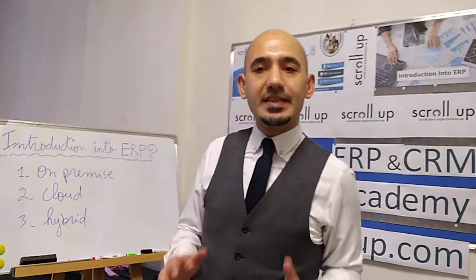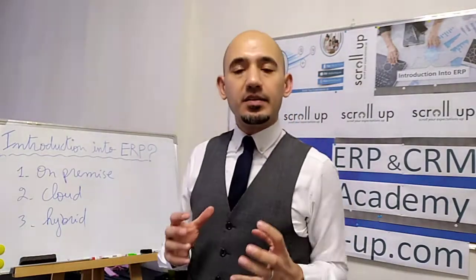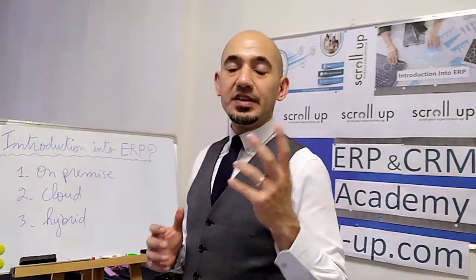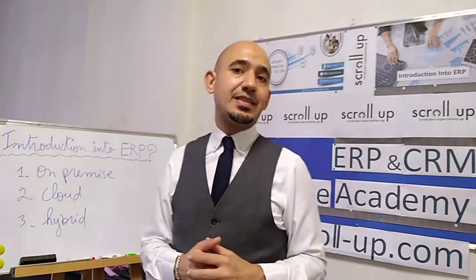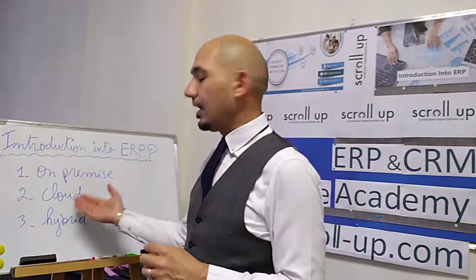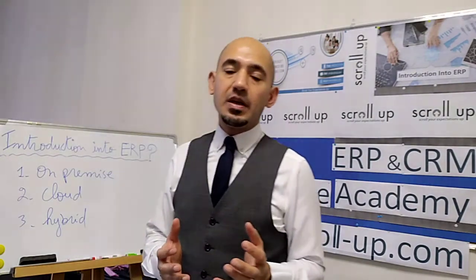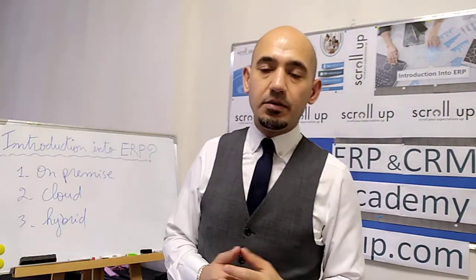Now talking about the ERP architecture, we have two different angles to see the ERP. The first angle is: what are the types of ERP? We currently have three types — on-premise, cloud, and hybrid mode. We are going to talk about all three now.